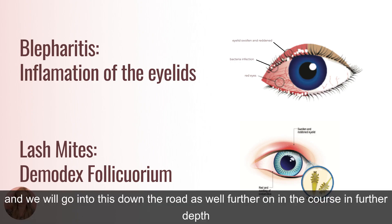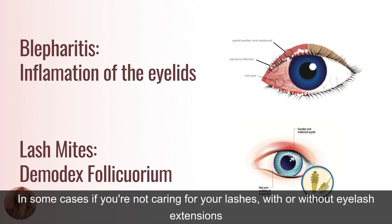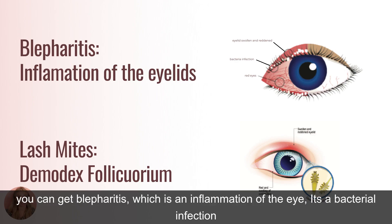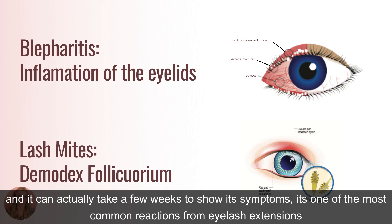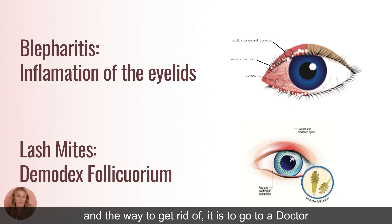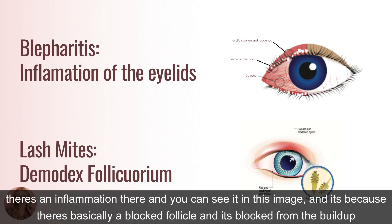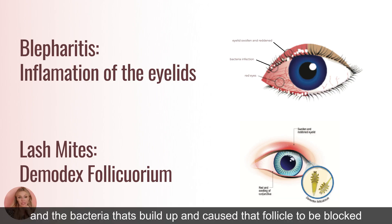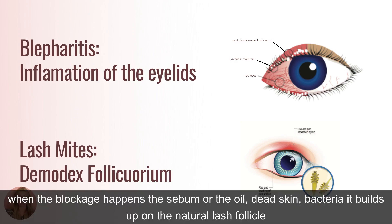There are a few things that can happen to the eye if it's not cleaned properly, and we'll go into further depth on this later in the course. If you're not caring for your lashes — with or without extensions — you can get blepharitis, which is an inflammation of the eye caused by a bacterial infection. It can take a few weeks to show its symptoms and is one of the most common reactions associated with eyelash extensions, though it's not because of the extensions themselves but because of improper cleaning. The way to treat it is to see a doctor and get a prescription.